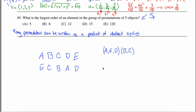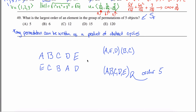For example, the 5-cycle (A B C D E) takes A to B, B to C, C to D, D to E, E back to A. The order of this element is 5, since you'd have to apply it five times to get back to the identity. But is 5 the largest possible order? Not necessarily.